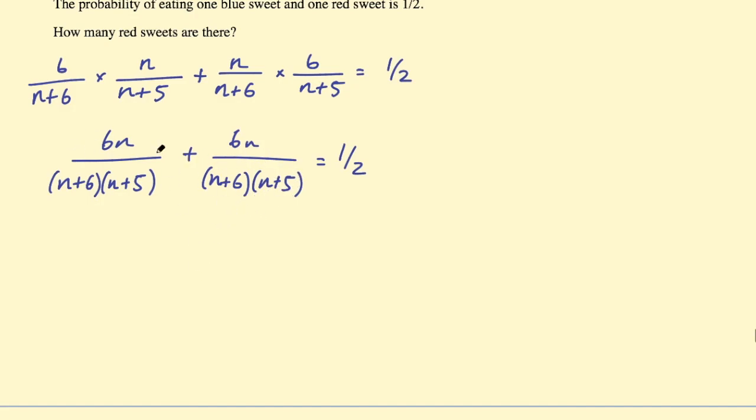And then we can combine these fractions because they have the same denominator, so this is going to be 6n plus 6n which is 12n. And let's expand these brackets, so these brackets are going to be n squared plus 11n plus 30.